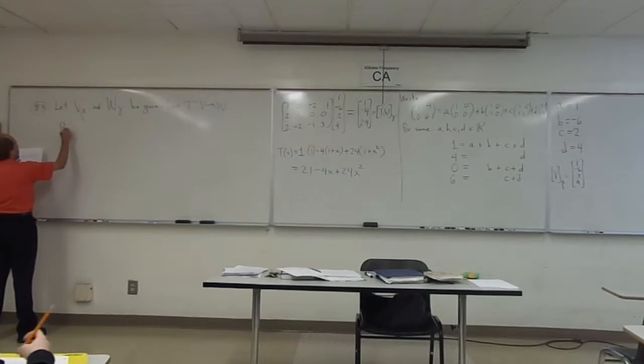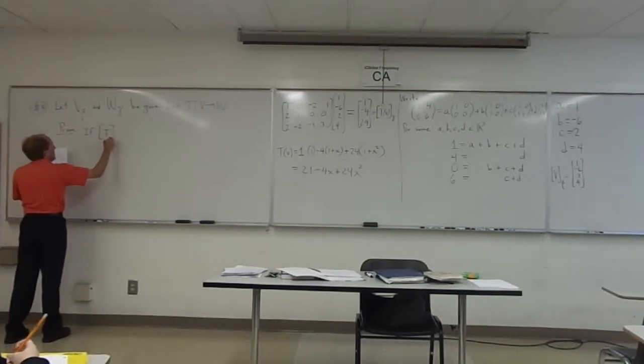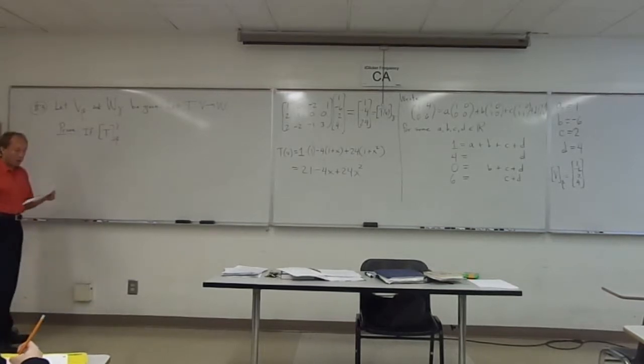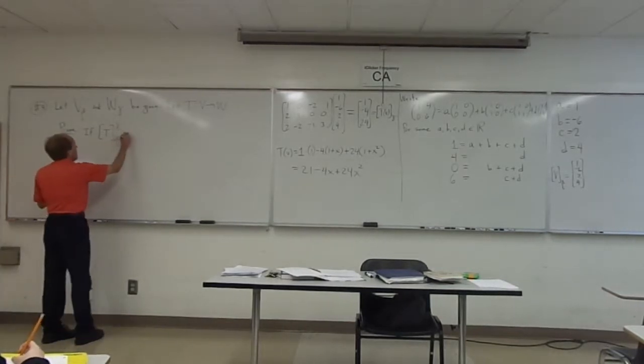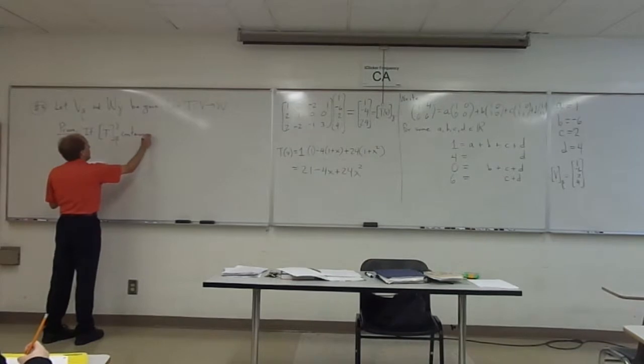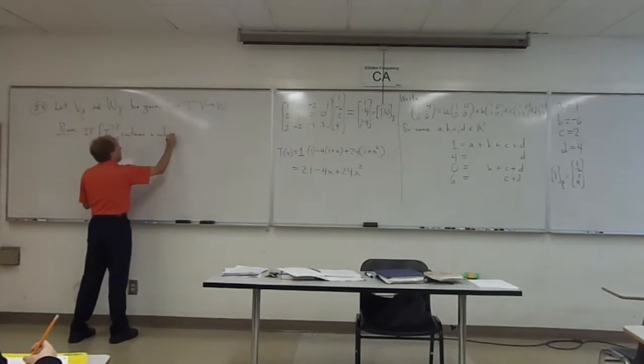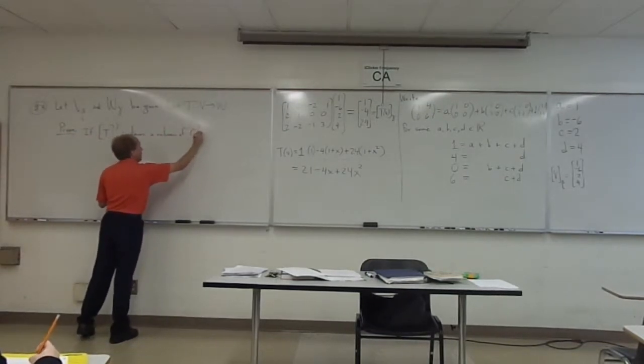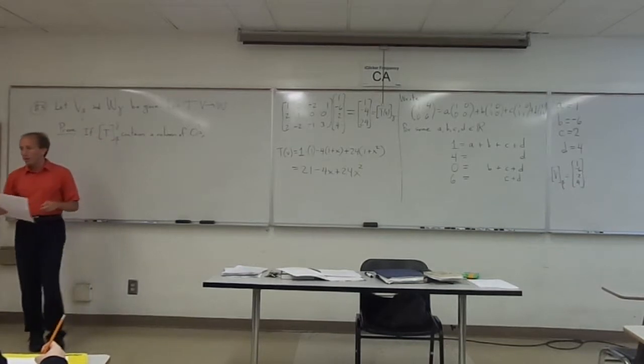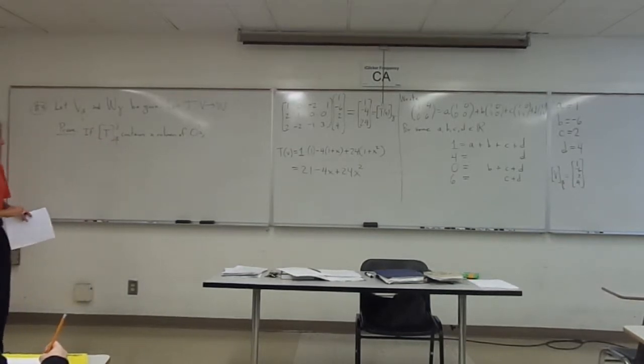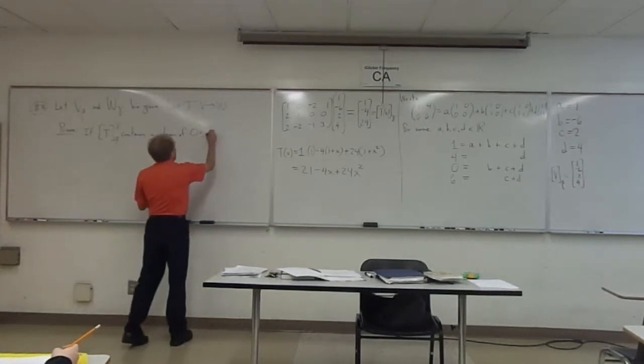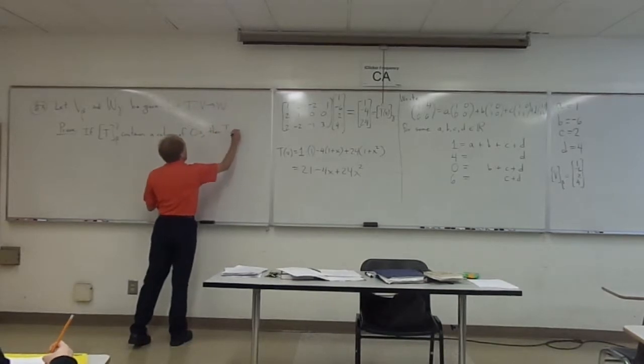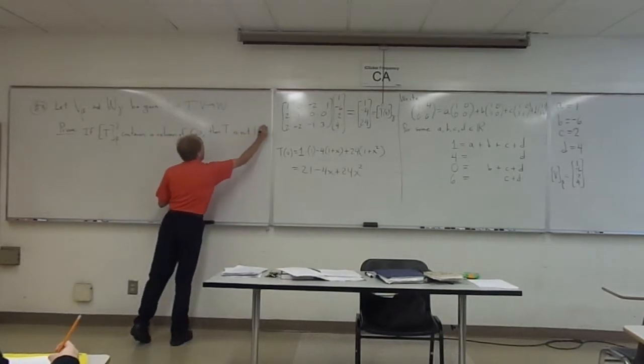Okay, so prove the following. If the matrix representation of T, beta to gamma, contains a column of zeros. Suppose we do the matrix transformation and we get a column of zeros, then T is not one-to-one.